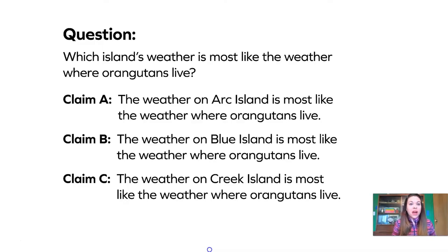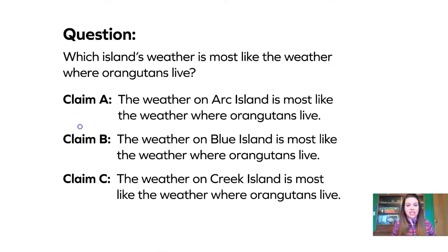The Wildlife Protection Organization has sent us three claims and they want us to argue which claim is the best. Let's read them together. Claim A: the weather on Arc Island is most like the weather where orangutans live. Claim B: the weather on Blue Island is most like the weather where orangutans live. And Claim C: the weather on Creek Island is most like the weather where orangutans live.